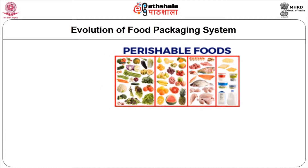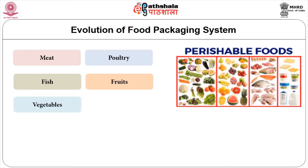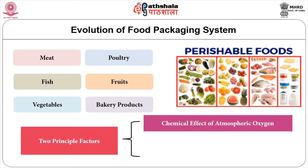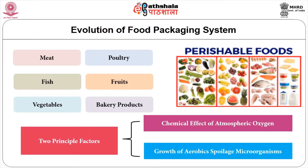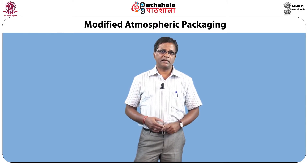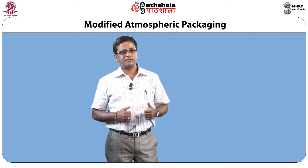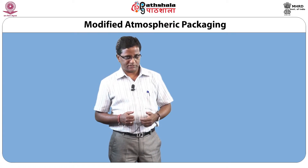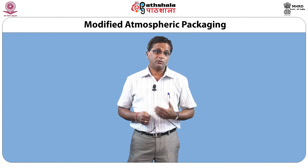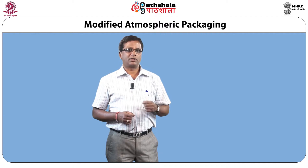The shelf life of perishable foods such as meat, poultry, fish, fruits, vegetables, and bakery products is limited in the presence of normal air by two principal factors: the chemical effect of atmospheric oxygen, and the growth of aerobic spoilage microorganisms. These factors, either individually or in association with one another, bring about changes in odor, flavor, color, or texture, leading to overall deterioration in quality.